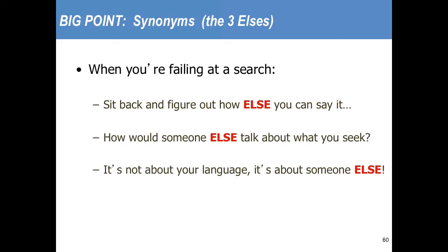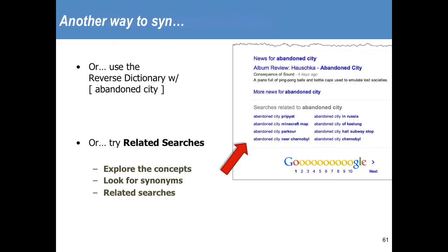If the reverse dictionary is one way to get out of your internal mental prison, another way is to use the suggestion list. I did a search for 'abandoned city' and at the bottom of the search page there's a whole pile of other searches that people have done — sometimes that will be enough to get you out of your conceptual lockbox. Remember the related searches at the bottom.